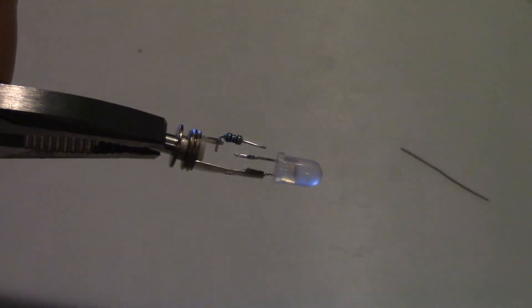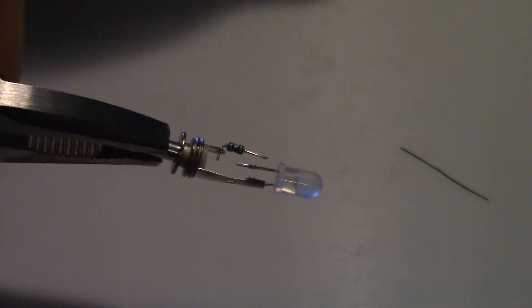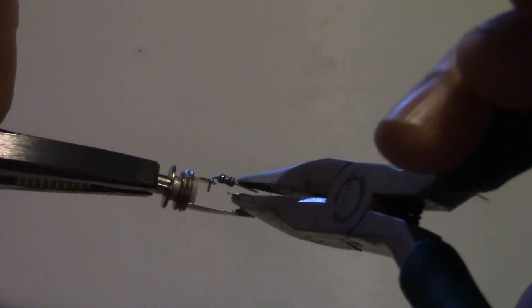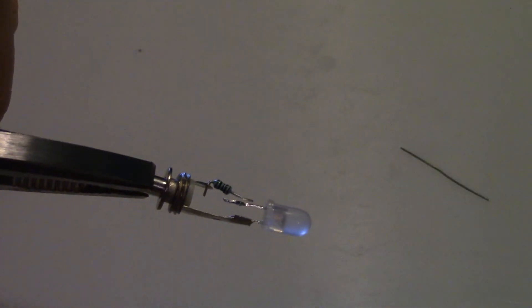Cut the remaining lead to length and bend it so that it touches the leg on the LED. Solder.